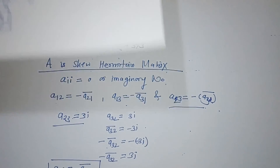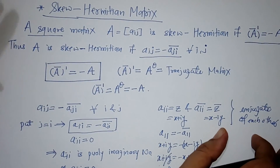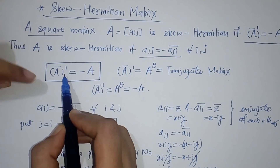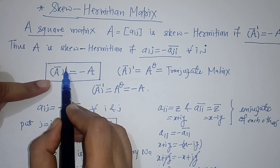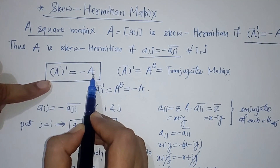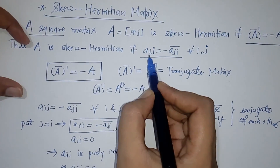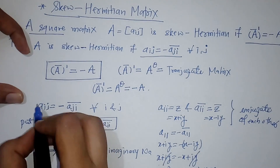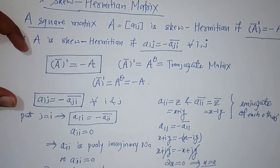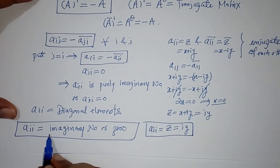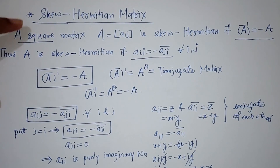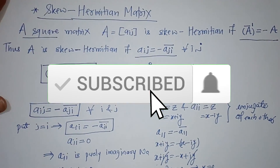In summary, we have seen skew Hermitian matrix. A matrix A is called skew Hermitian when the transpose of the conjugate matrix equals the negative of A. In element-wise form, Aij and Aji are the negative conjugates of each other. Diagonal elements must be purely imaginary numbers or zero. This is all about skew Hermitian matrix. Thank you.